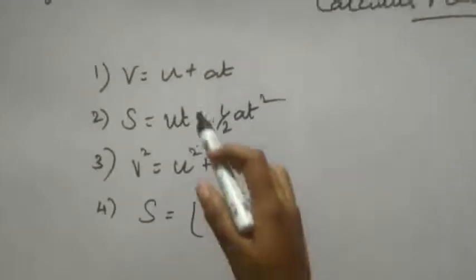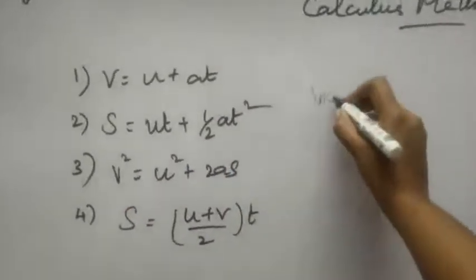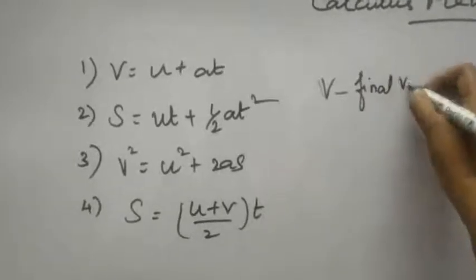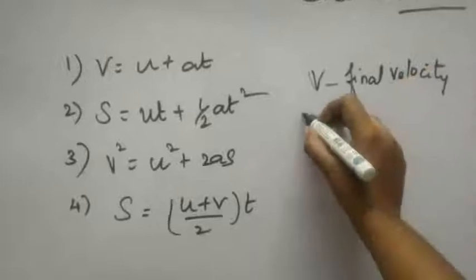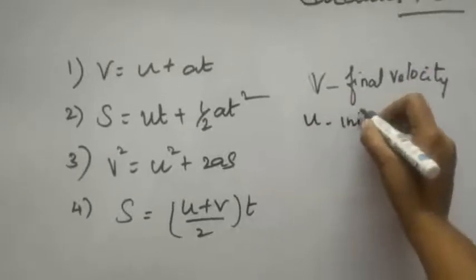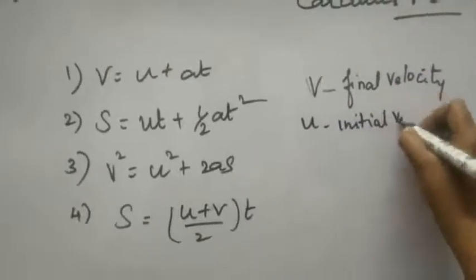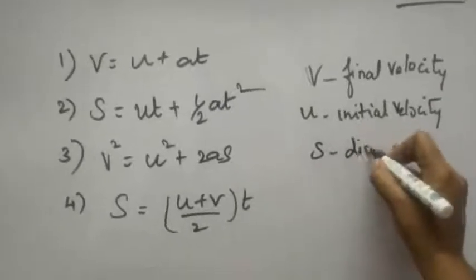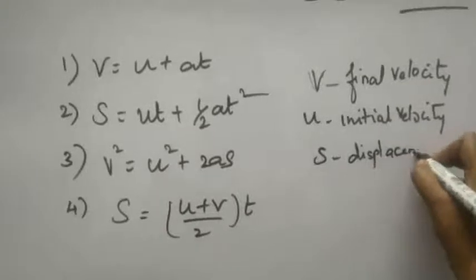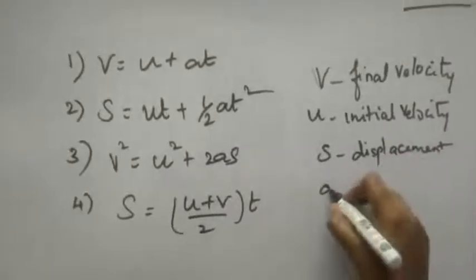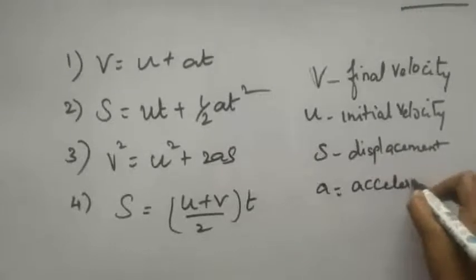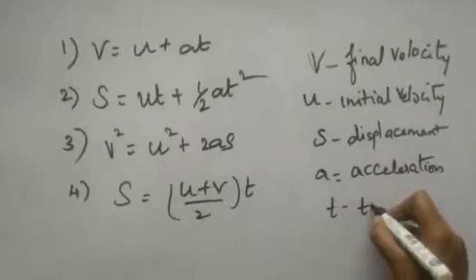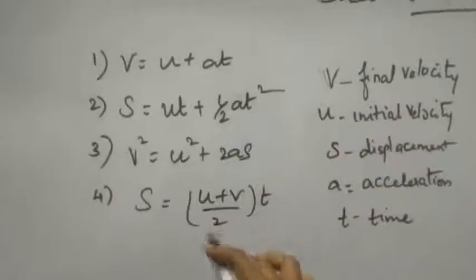Understand the terms in these equations. v is the final velocity, u is initial velocity, s is displacement, a is acceleration, and t is time.